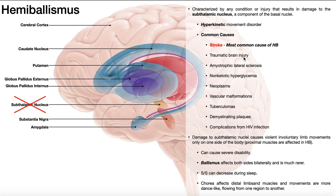You can also have hemiballismus as a result of traumatic brain injury — if you get hit in the head really hard, like in a motor vehicle accident, and it damages the subthalamic nucleus. Also ALS, amyotrophic lateral sclerosis, randomly damages areas of the nervous system, and if it happens to damage the subthalamic nucleus, you get hemiballismus. So if you have any one of these conditions and it damages this structure, you will potentially have hemiballismus. That's the first way hemiballismus differs from Huntington's disease.